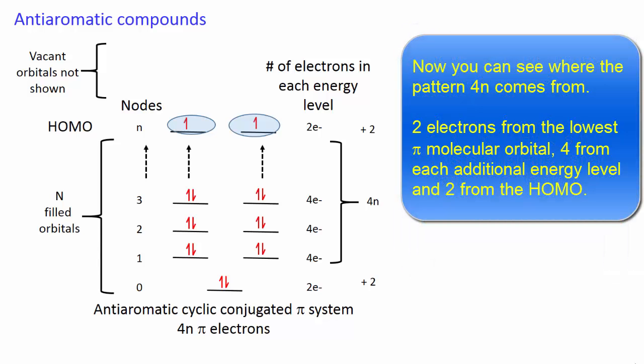Now you can see where the pattern 4n comes from: 2 electrons from the lowest pi molecular orbital, 4 from each additional energy level, and 2 from the HOMO.